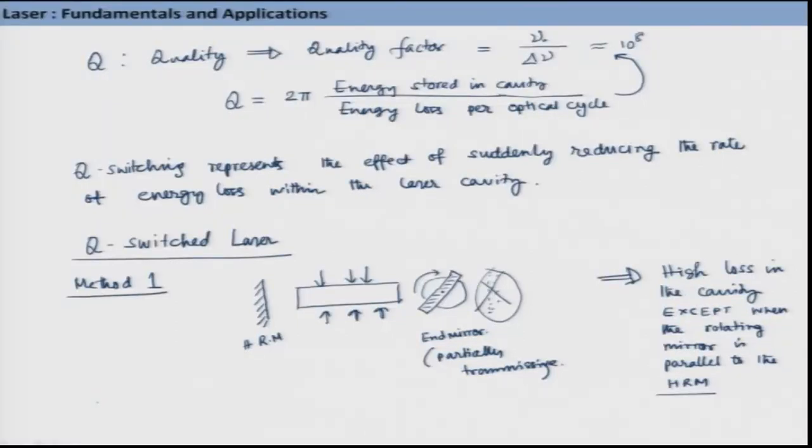In the case of a continuous wave laser, if we want to use Q-switching to make it pulsed, what we do is block all the oscillations in the laser cavity, thereby increasing the loss. At a given time, when enough population inversion has taken place, we allow the oscillation to take place once again — that is, round trips in the cavity — and a short pulse laser comes out. The pumping rate has to exceed the spontaneous decay rate. Q-switching, as shown using a rotating mirror in the previous class, works this way.